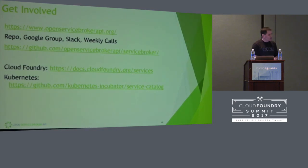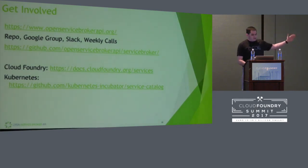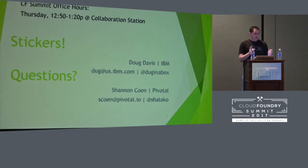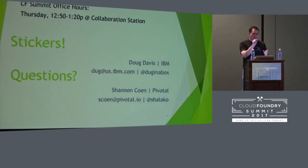Just some links for you to get involved: the top set are for the Open Service Broker API itself — we have a webpage, a GitHub repo, the Cloud Foundry link, and then a link to the Service Catalog GitHub repo for Kubernetes. We also have office hours tomorrow in the collaboration station from 12:50 to 1:20. Shannon and I will be there answering questions. And we do have some funny stickers — funny because they're incredibly small.